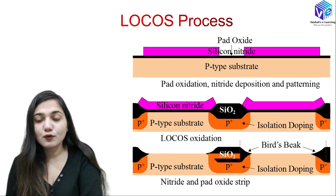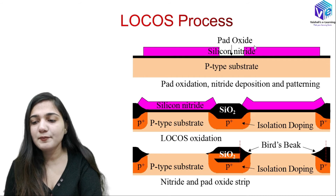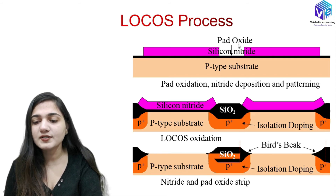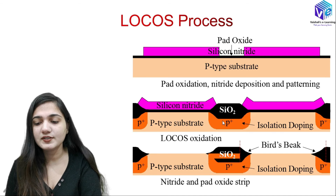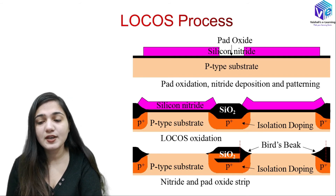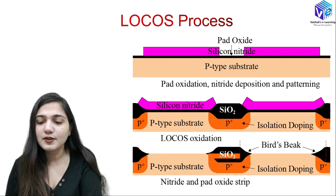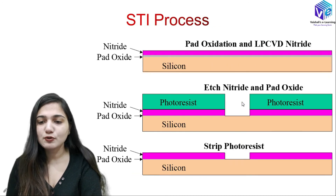In the LOCOS process, first we have the pad oxidation layer — a thin pad oxide layer. After that we have the nitride deposition (the pink deposited nitride layer). Then we do the patterning using photolithography. After that we perform local oxidation of silicon to grow the SiO2 layer, and then strip off the nitride and pad oxide layers. The resulting bird's beak structure is used for isolation of two devices. If I want to isolate two regions, I will use LOCOS or shallow trench isolation.